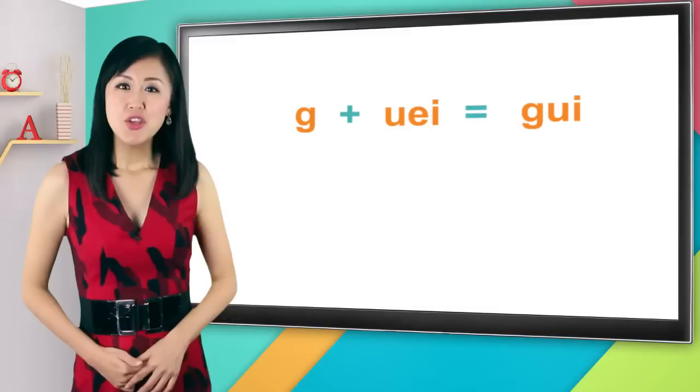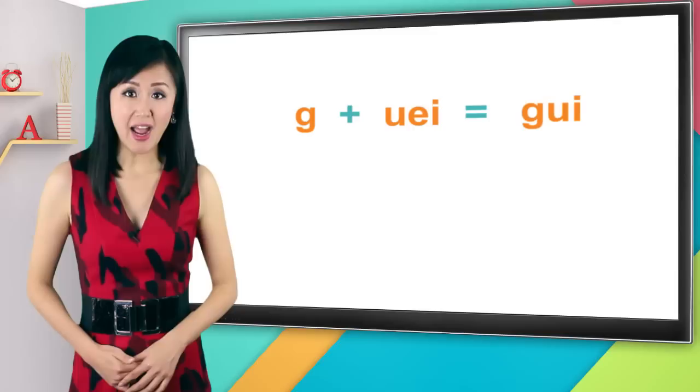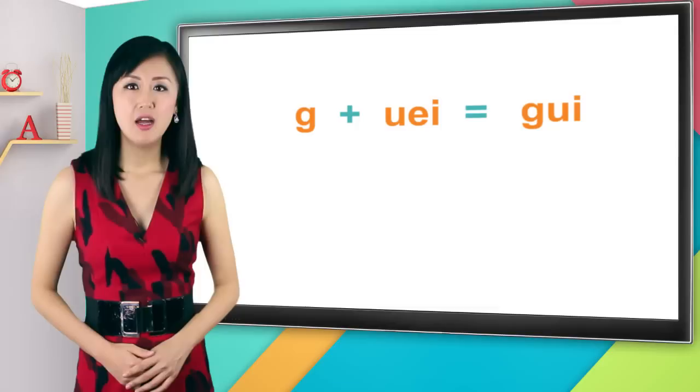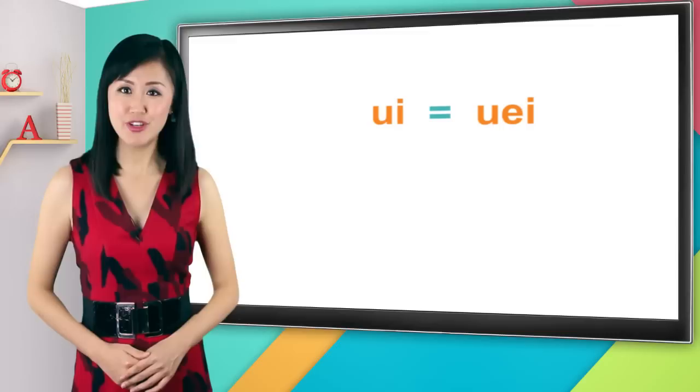Wei can also be combined with other initials. For example, the word gui means expensive, gui for song, gui. You might have noticed that when the initial g is combined with u-e-i wei, the spelling is gui instead of g-u-e-i. Here, the e is dropped.